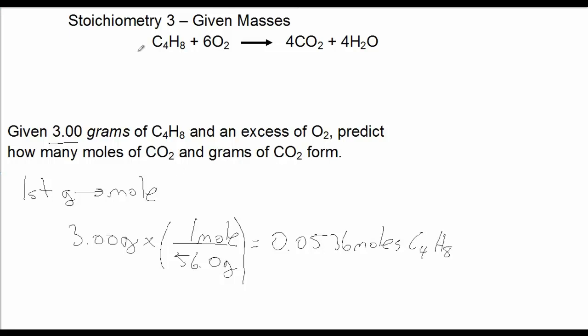So rather than putting 3 up here, which would be 3 grams, which is not correct, I'm going to put 0.0536. And it states that I have an excess of O2, so I don't need to be concerned about the O2. So I base the amount of CO2 I'm going to produce on 0.0536 moles of C4H8.